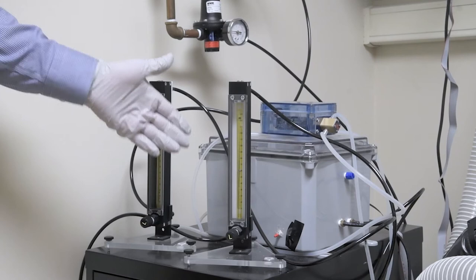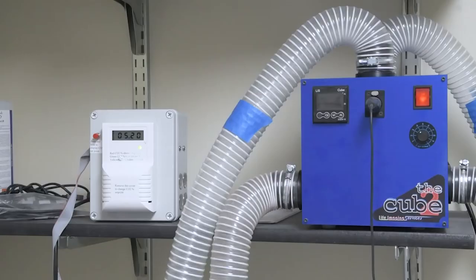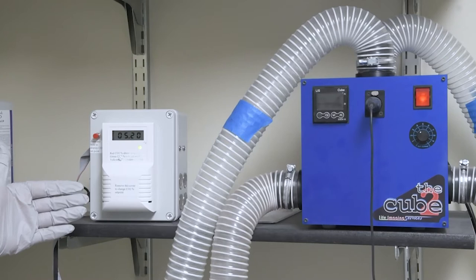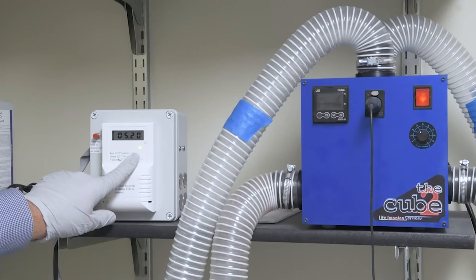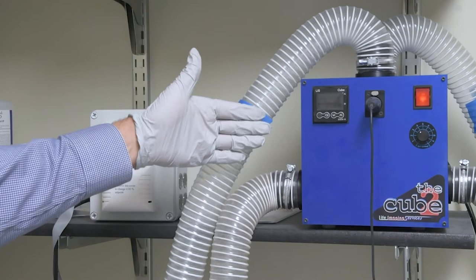Here we have our homemade gas mixing chamber which takes the house medical air and CO2, runs it through these flow meters and gives us 5% CO2 to send into the microscope. Up on the shelf, the CO2 detector will tell you what the CO2 percentage is. It's set to 5%, but as long as that green light is on you know you're within range, between 4.5 and 5.5%, which is acceptable for your cells.